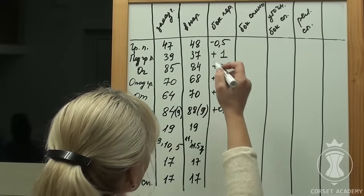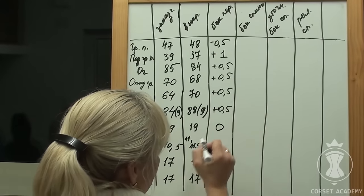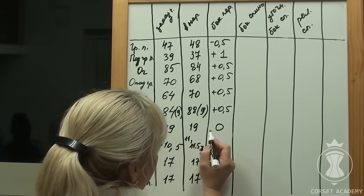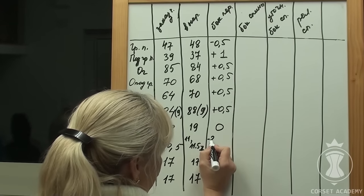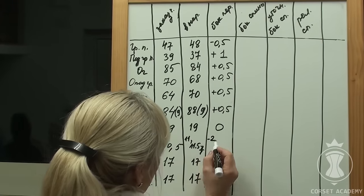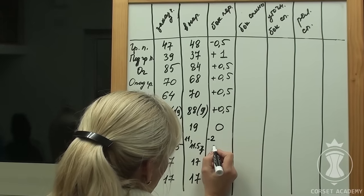Bust middle measurement requires no alterations. I write a 0 in the table. Now the clip measurement. Clip towards the sky: I need to remove 2 cm. Clip towards the corner: I need to remove 1.5 cm.